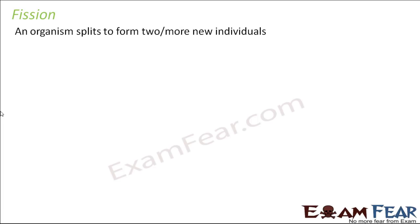Fission is a process in which an organism splits into two or more new individuals. The word fission means splitting — to separate into two parts. It is so simple that no male, female, or sexual intercourse is required; the organism itself gets split into two halves and that is how two new organisms are formed.